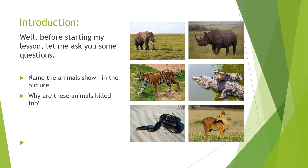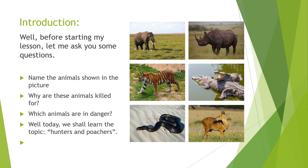Why are these animals killed? Obviously, these animals are killed to get some of their parts. Then which animals are in danger? Such animals where their parts are very useful or very costly. So hunters and poachers, they kill such animals to earn money or for using those parts. So most of these are in danger. Today we shall learn the topic: Hunters and Poachers.